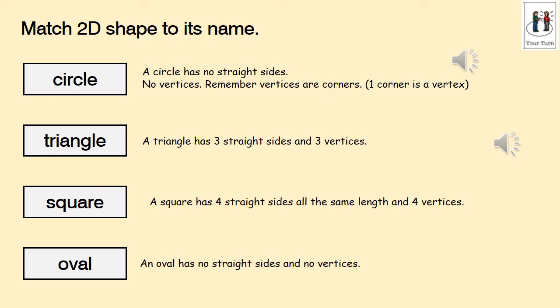For the next activity, you're going to match the 2D shape to its name. Before you see the shapes, I'm going to give you some information. This information is called the properties of a shape. A circle has no straight sides and no vertices. Remember, vertices are corners. If there's one corner, we don't call it vertices, we call it a vertex. A triangle has three straight sides and three vertices. A square has four straight sides, all of the same length and four vertices. An oval has no straight sides and no vertices.